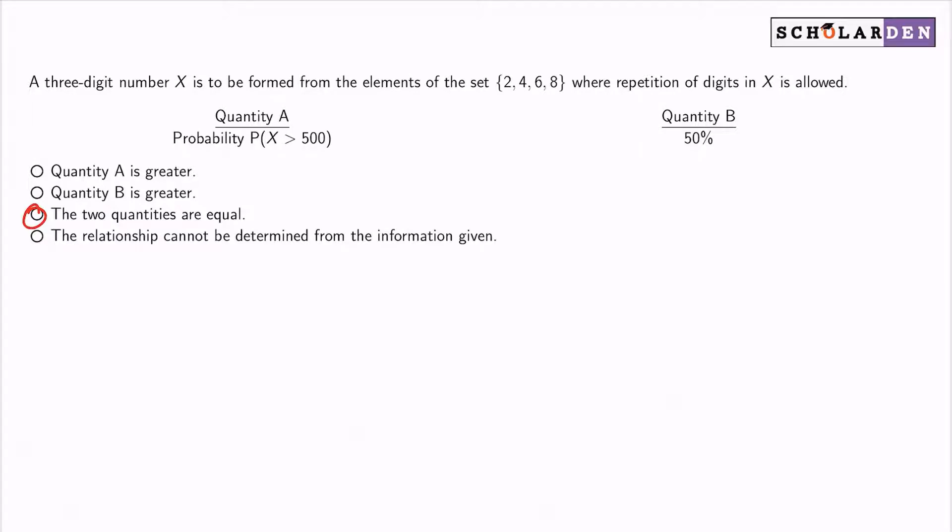The repetition of the digits in X are allowed. When we think about the possibilities that we have for all three digits in there, you actually don't even need to count all of the possibilities. All you need to understand is that in the hundreds digit, we can have either 2, 4, 6, or 8.